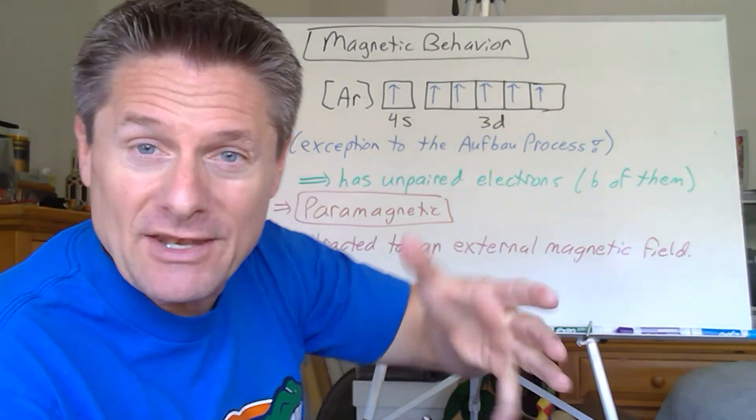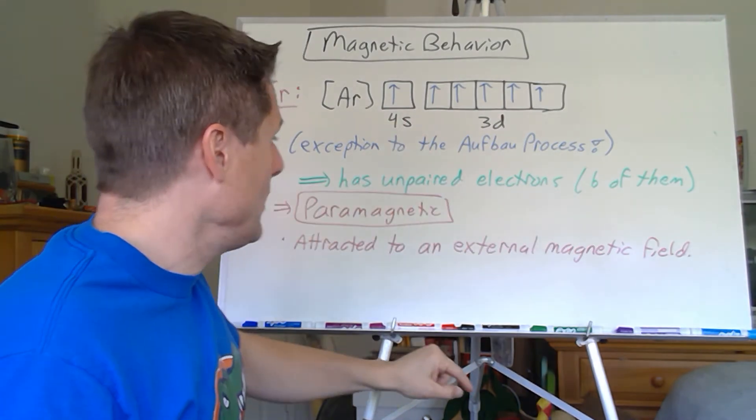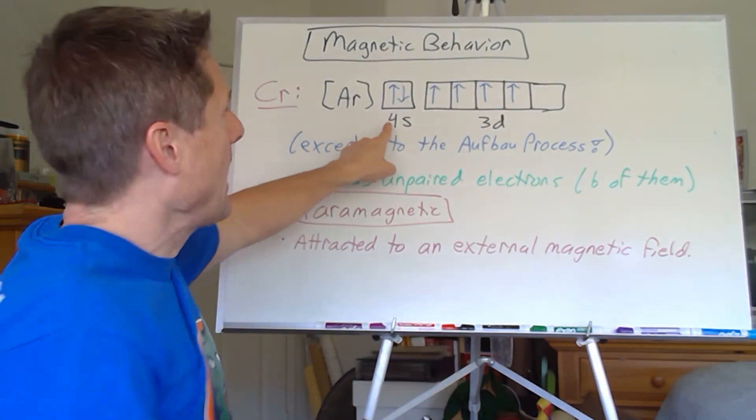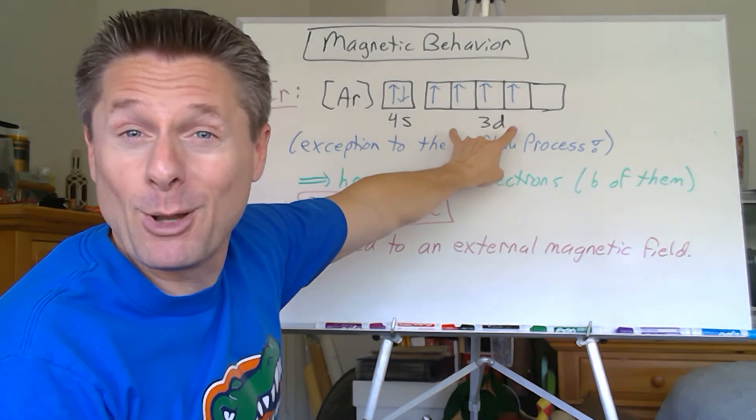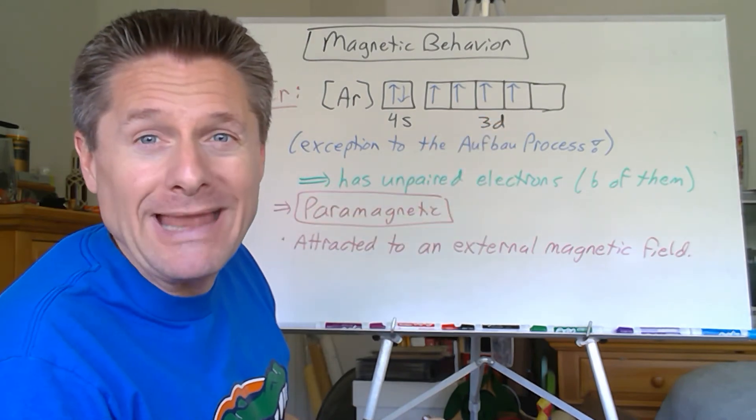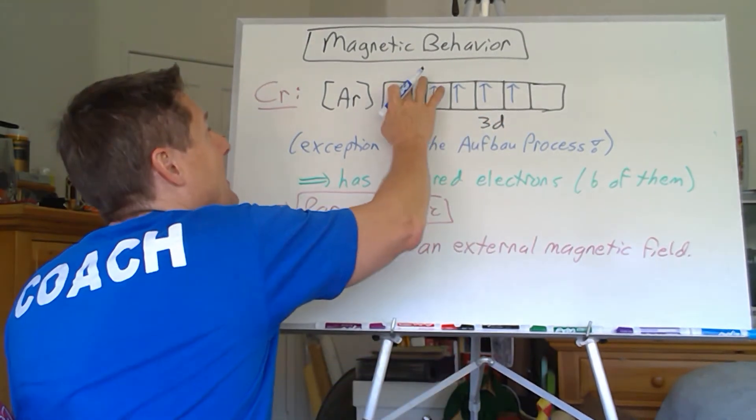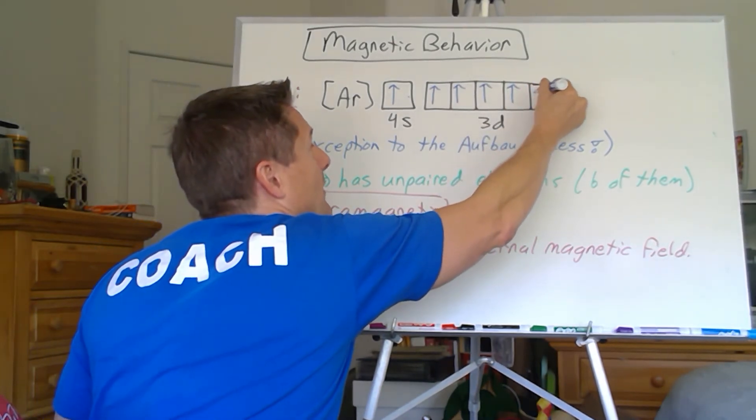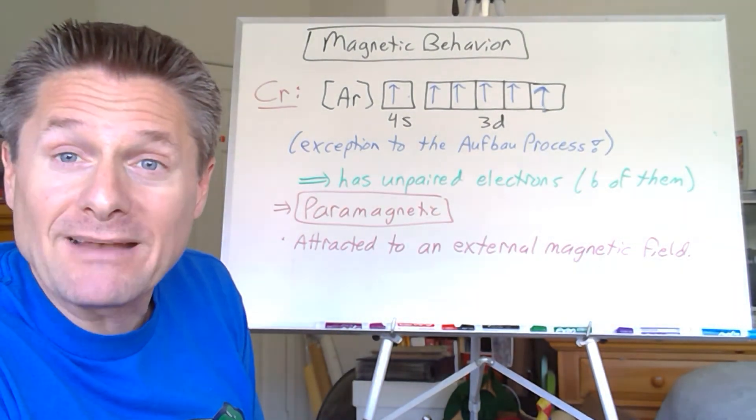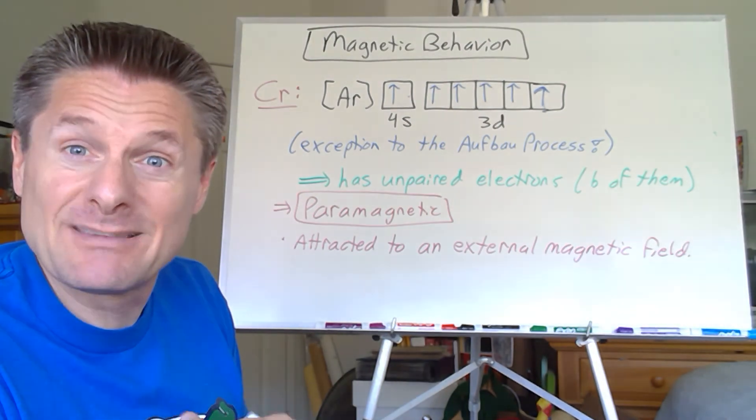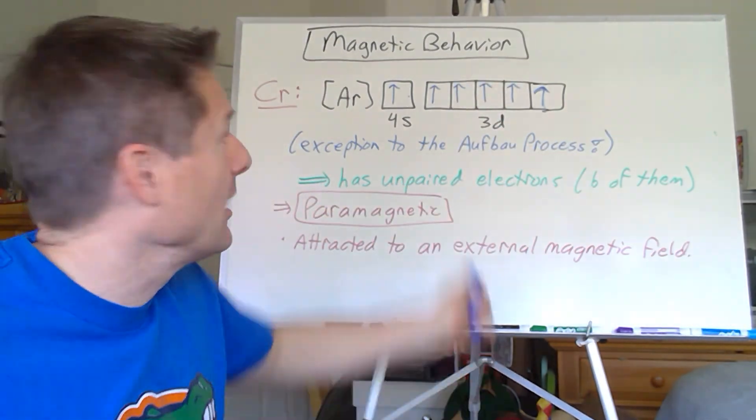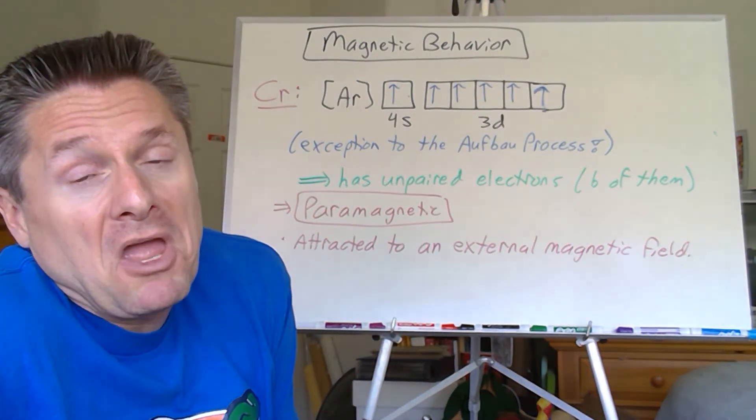This is how they determined that chromium was an exception. What if we drew this the original way from the Aufbau process? That would be 4S2 with four unpaired electrons. But if you do spectroscopy experiments, you'll find it doesn't have the paramagnetic behavior of something with four unpaired electrons. It has the behavior of something with six unpaired electrons. Can you see how in lab they would find a discrepancy? It must promote that electron to create a symmetric electron distribution within the subshell.